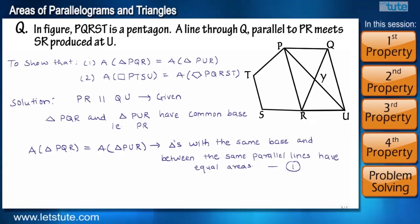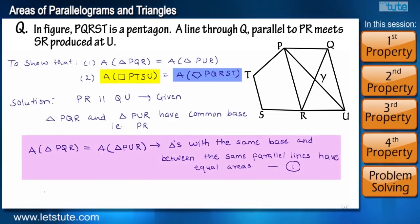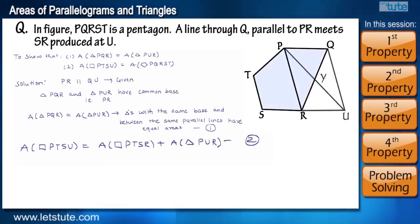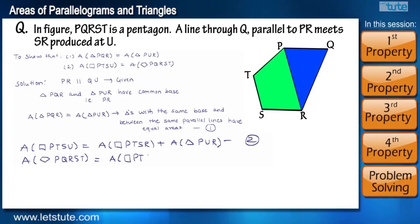The next part says that we have to prove that the pentagon and the quadrilateral are having equal areas. Now the second part may look complicated but you will see how we can easily solve it using the first part itself. Here we can split the quadrilateral into quadrilateral PTSR and triangle PRU. And in the same way we can split the pentagon into quadrilateral PTSR and triangle PRQ.